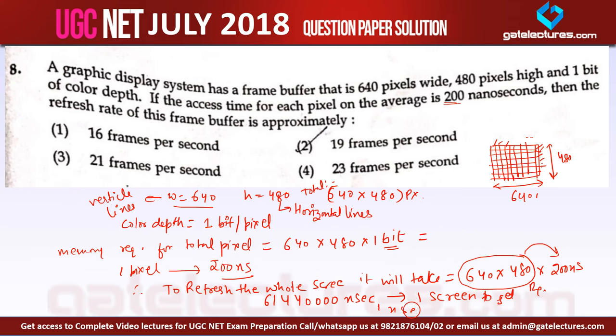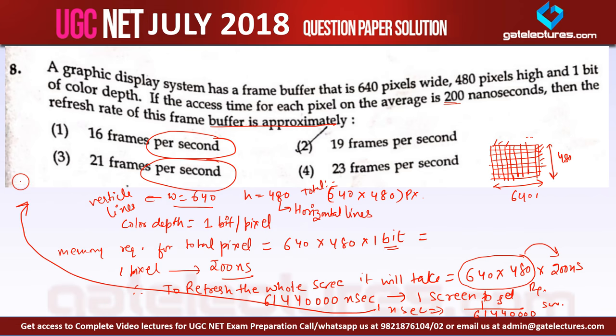And we know in 1 nanosecond, it will be refreshing 1 upon 61,440,000 screen. So if they are asking what will be the refresh rate for this frame buffer approximately, and this refresh rate here is given in per second. Now we know that in 1 second how much screen will be refreshed. Now convert this nanosecond to seconds.